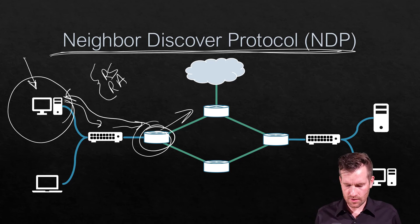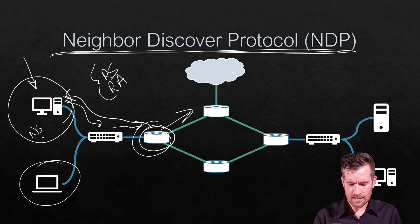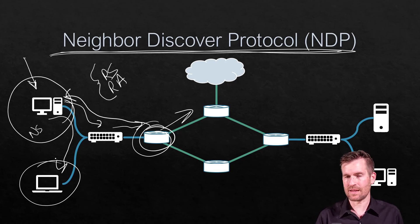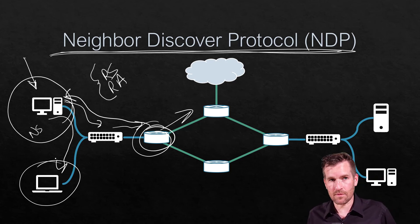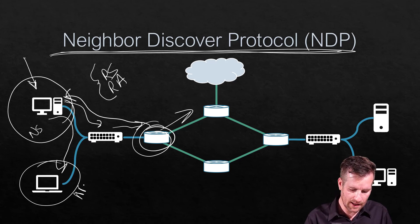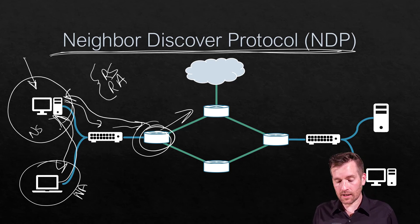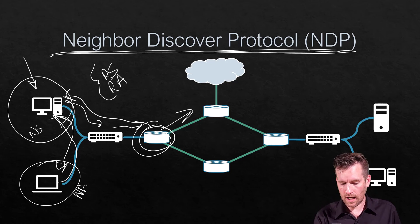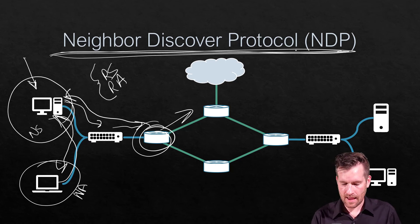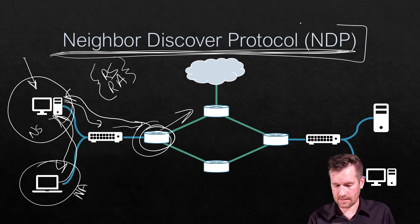Another thing that neighbor discovery protocol will do is maybe it needs to communicate somewhere within its network. Then it will send out a neighbor solicitation to figure out the MAC address associated with a certain IP version 6 address. And then this machine will send back a neighbor advertisement saying okay, that's me, here is my MAC address. So ICMP, although it is largely used for troubleshooting, we also use it for other types of discoveries — neighbor solicitation and advertisement, and router solicitation and advertisement, are examples of that with the neighbor discovery protocol.